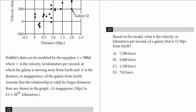Hubble's data can be modeled by the equation V equals 500 times D, where V is the velocity in kilometers per second at which the galaxy is moving away from Earth, and D is the distance in megaparsecs of the galaxy from Earth. Assume that the relationship is valid for larger distances than are shown in the graph, and they also give the conversion of megaparsec is 3.1 times 10 to the 19 kilometers.